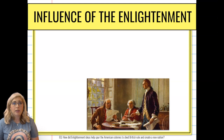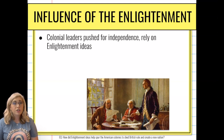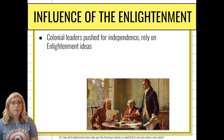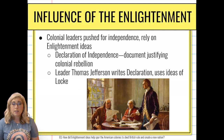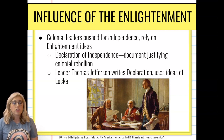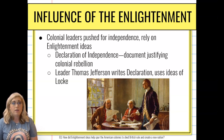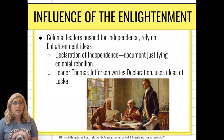Colonial leaders are pushing for independence — they don't want to be a colony of Great Britain anymore, and they're relying heavily on some of those Enlightenment ideas discussed previously. We have the Declaration of Independence, which is penned by Thomas Jefferson. It's a document that justifies why the American colonies wanted to rebel, why they feel justified in doing so, and why they have the ability to do that. Thomas Jefferson took a lot of ideas from John Locke, which we talked about with the Enlightenment as well.